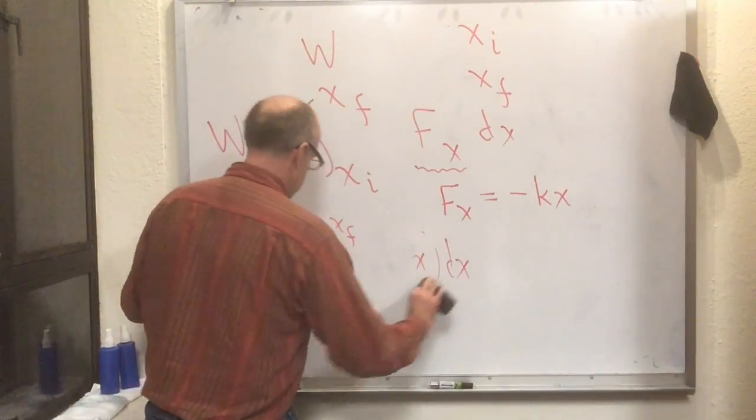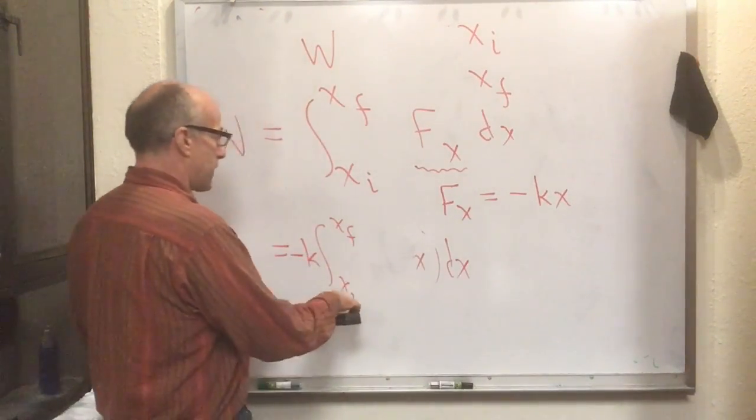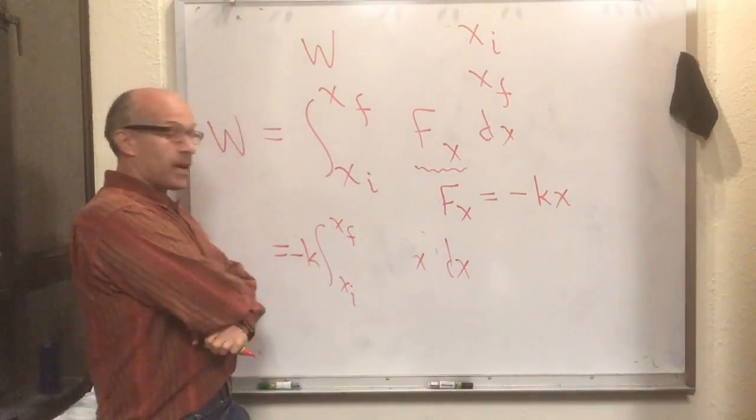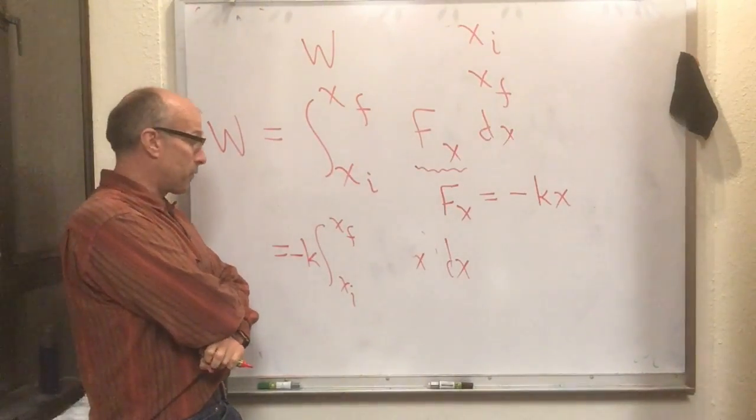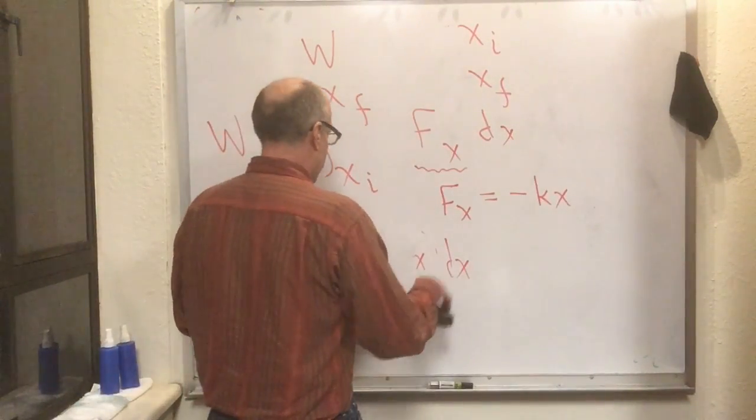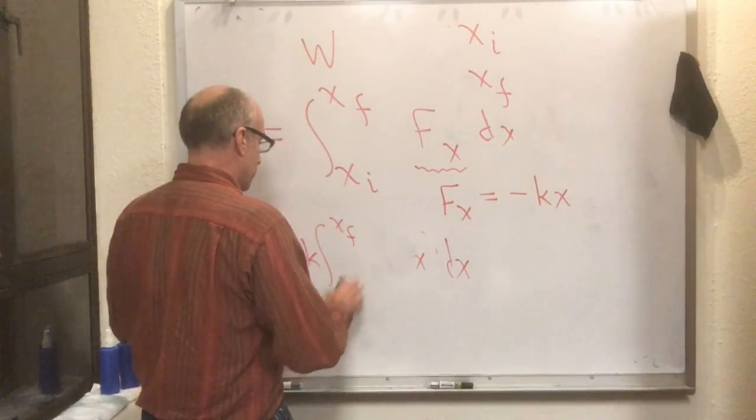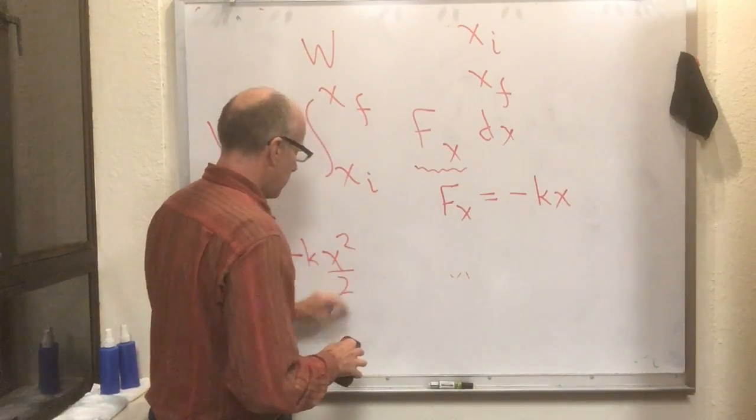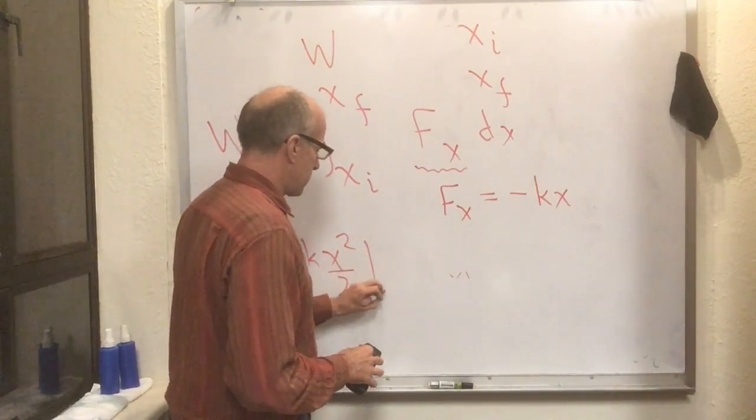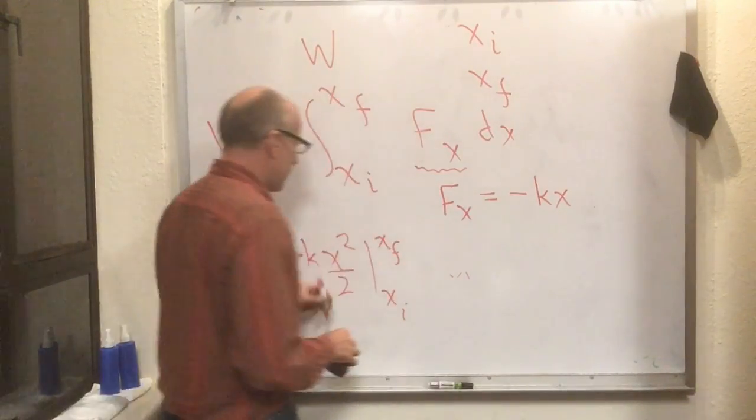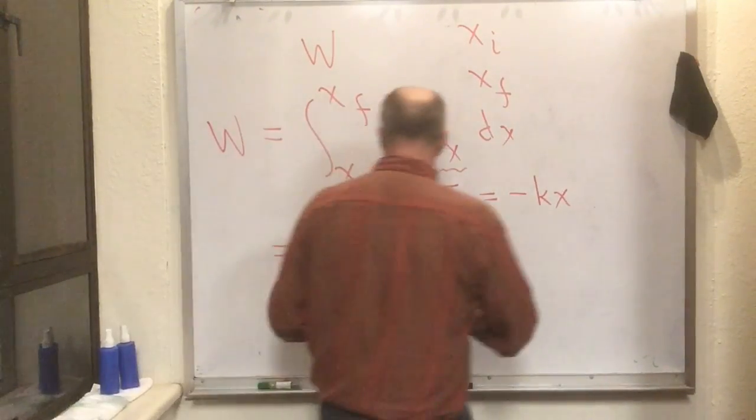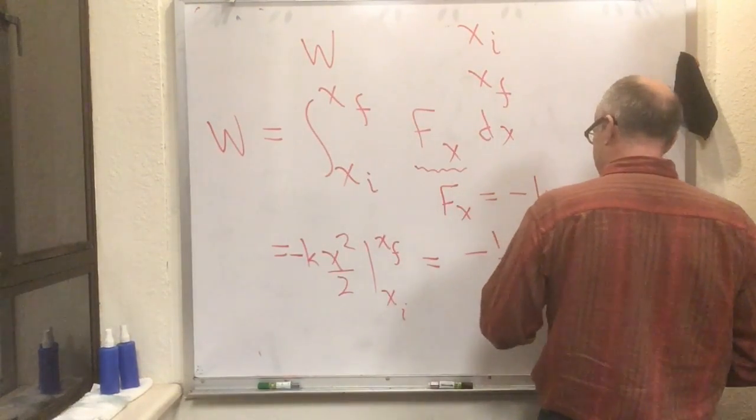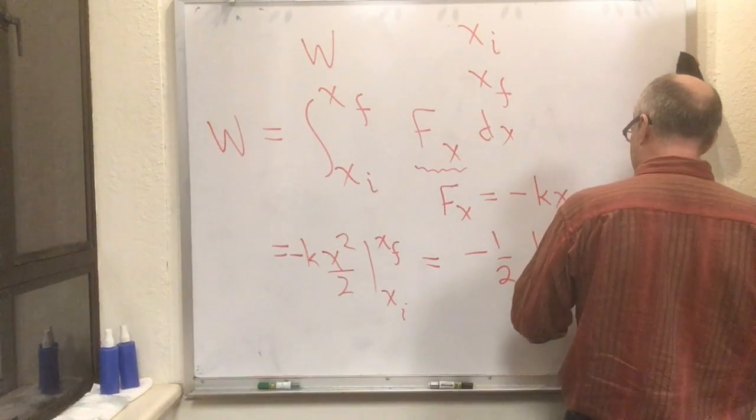The integral of x dx is one I mentioned a couple flipped lectures back. The integral of x dx is x squared over two. So that's -k times x squared over two. We need to put in the limits of integration, evaluated from x final to x initial. This is minus one-half k x-final squared plus one-half k x-initial squared.